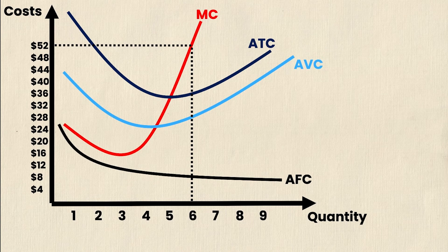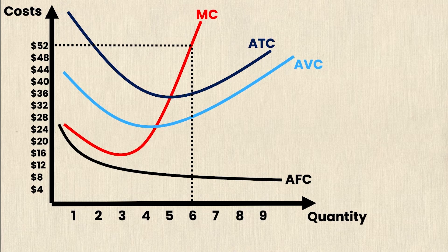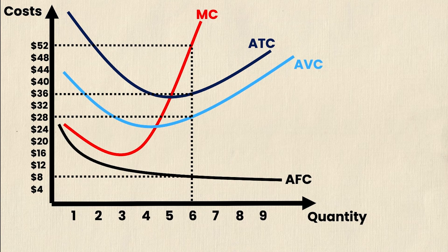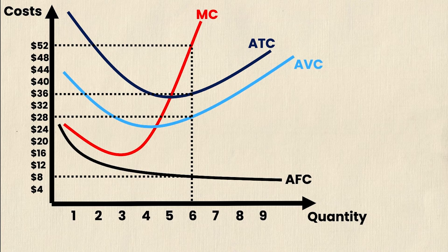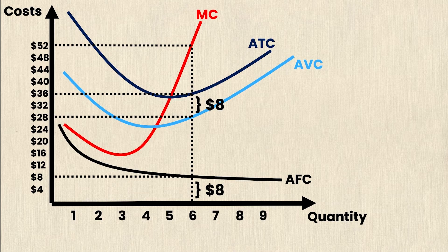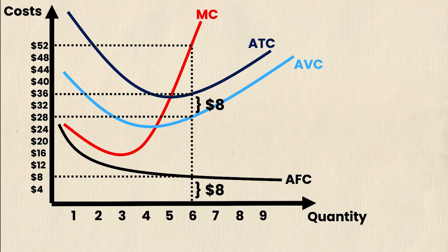Similarly, we could do this for each of the cost curves. So the average total cost at six units is $36. The average variable cost for six units is $28. And finally, the average fixed cost of six units in this case is $8. Now keep in mind, as I mentioned before, the average total cost is the sum of the average variable cost and the average fixed cost. So what you'll notice is that these two values right here are the exact same. They're both $8. So the difference between $36 and $28, that is the difference between the average total cost and the average variable cost is $8. And so is the difference between the average fixed cost and the x-axis. This will always be the case.